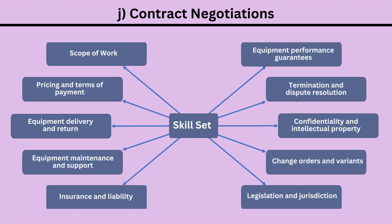Key factors in contract negotiations include: 1. Scope of work. 2. Pricing and terms of payment. 3. Equipment delivery and return. 4. Equipment maintenance and support. 5. Insurance and liability. 6. Equipment performance guarantees. 7. Termination and dispute resolution. 8. Confidentiality and intellectual property. 9. Change orders and variance. 10. Legislation and jurisdiction.